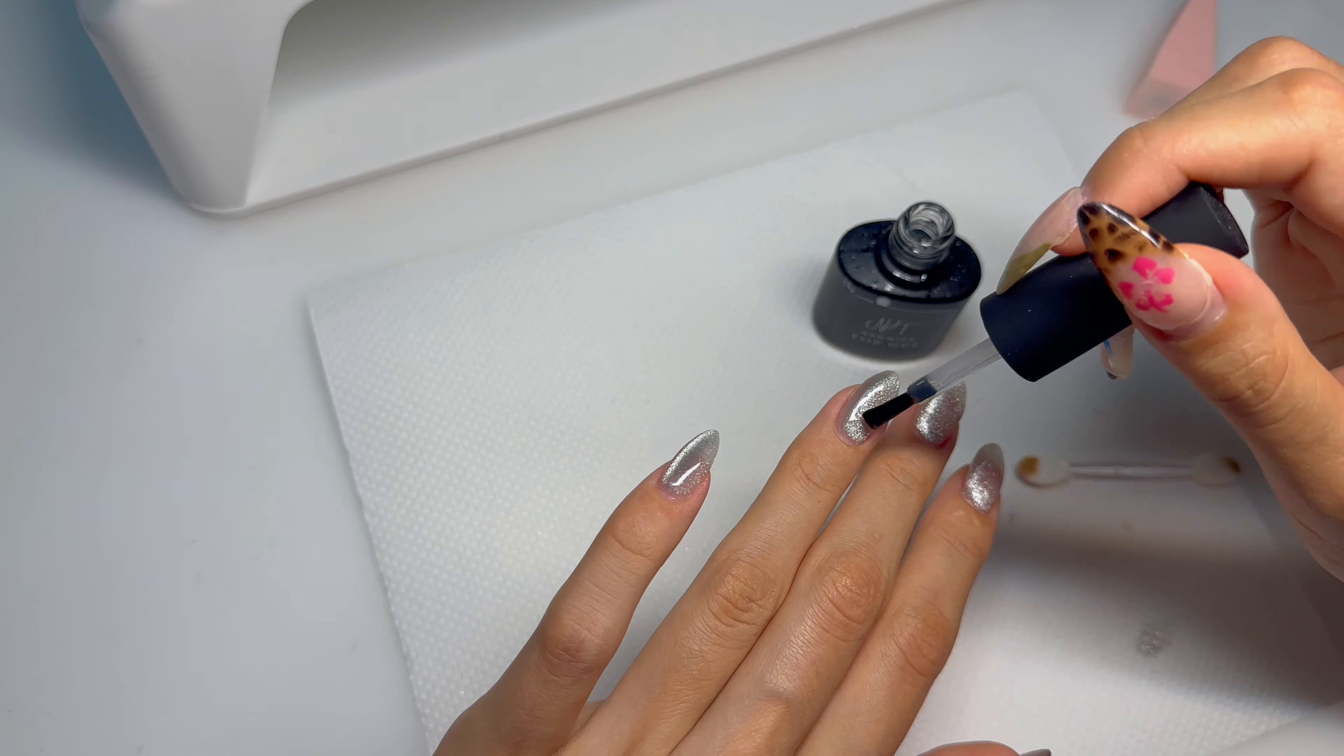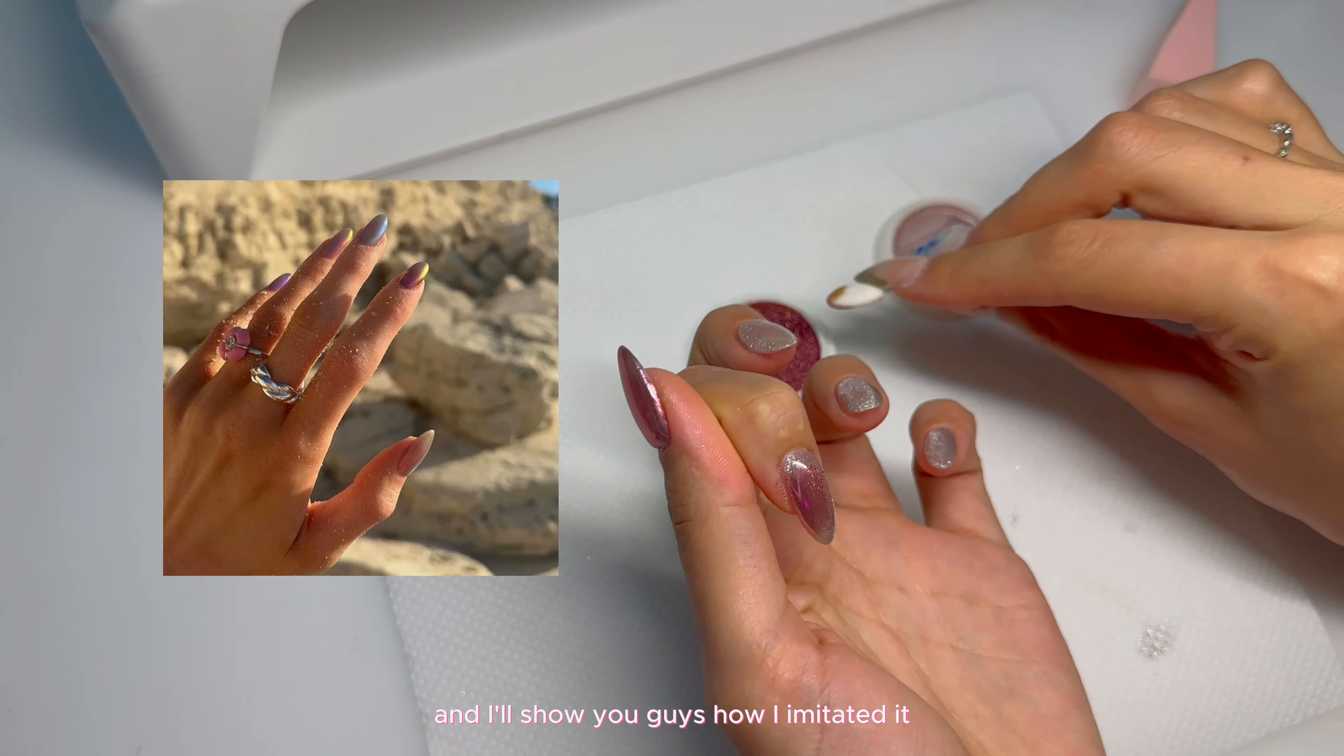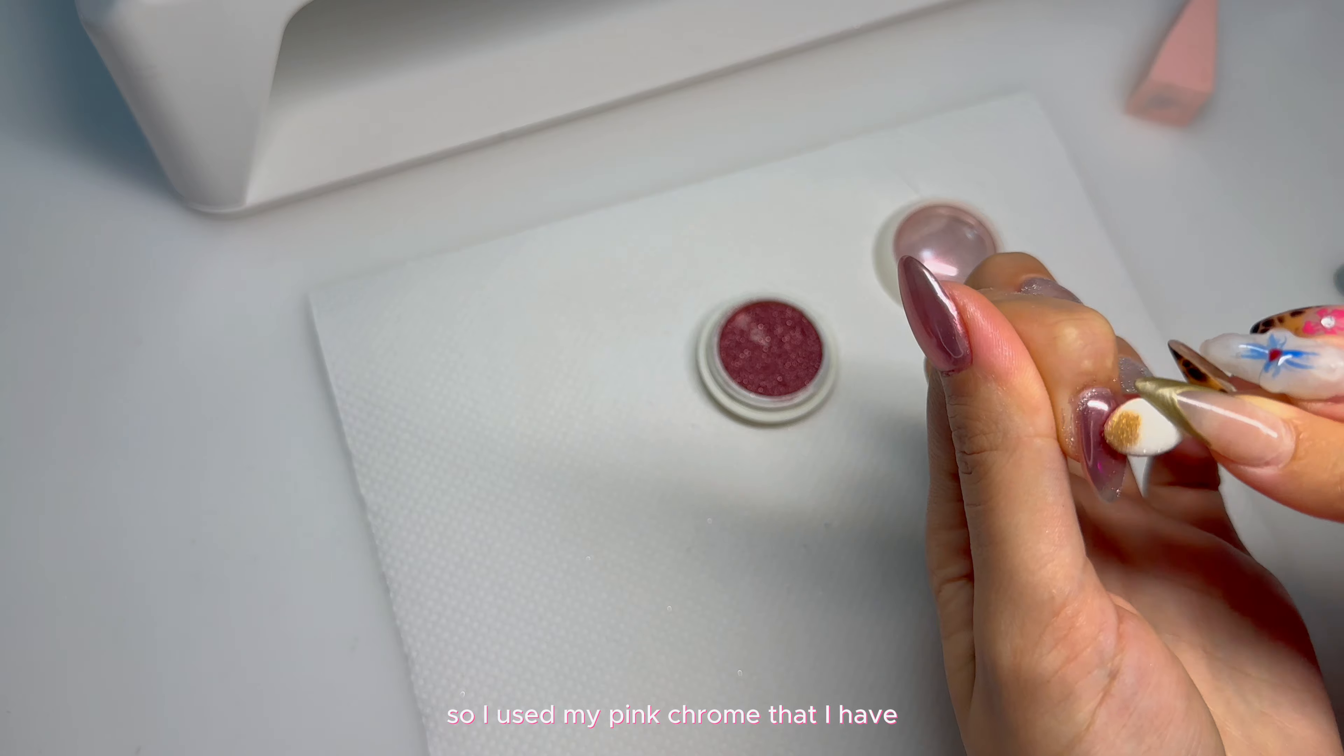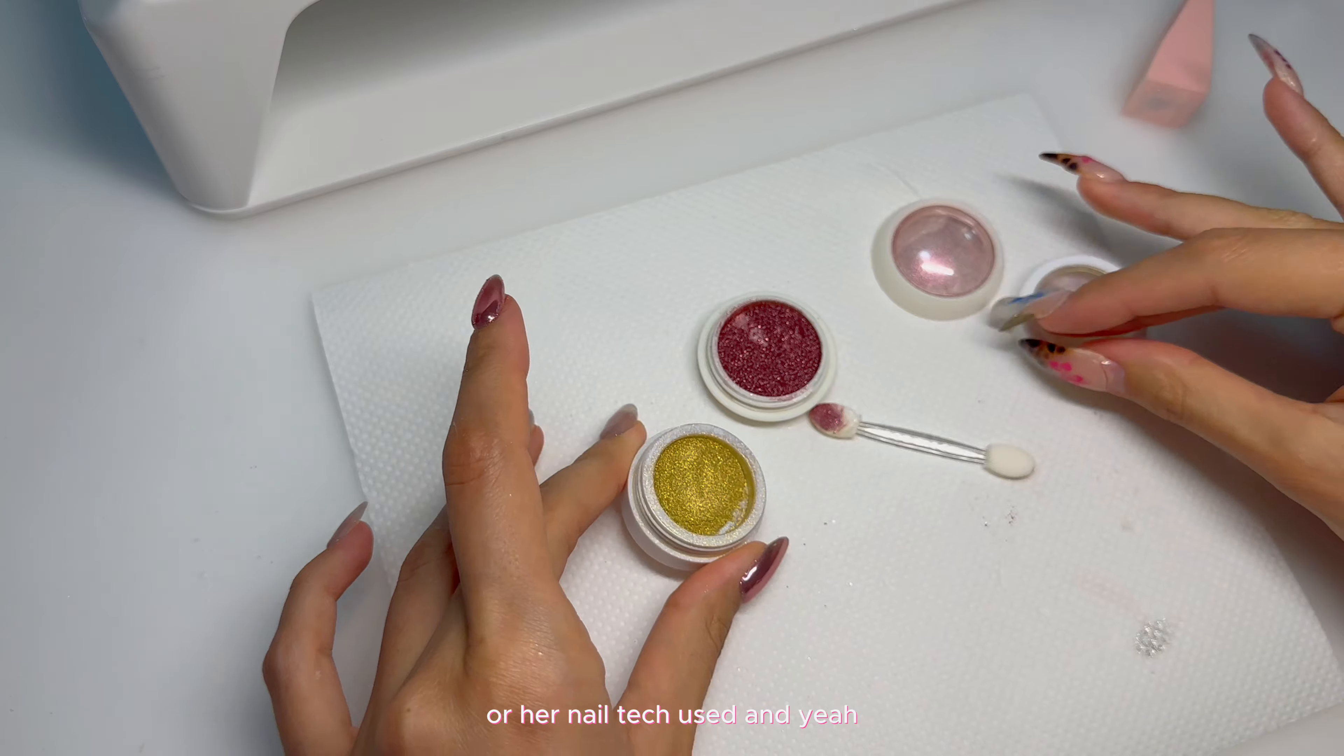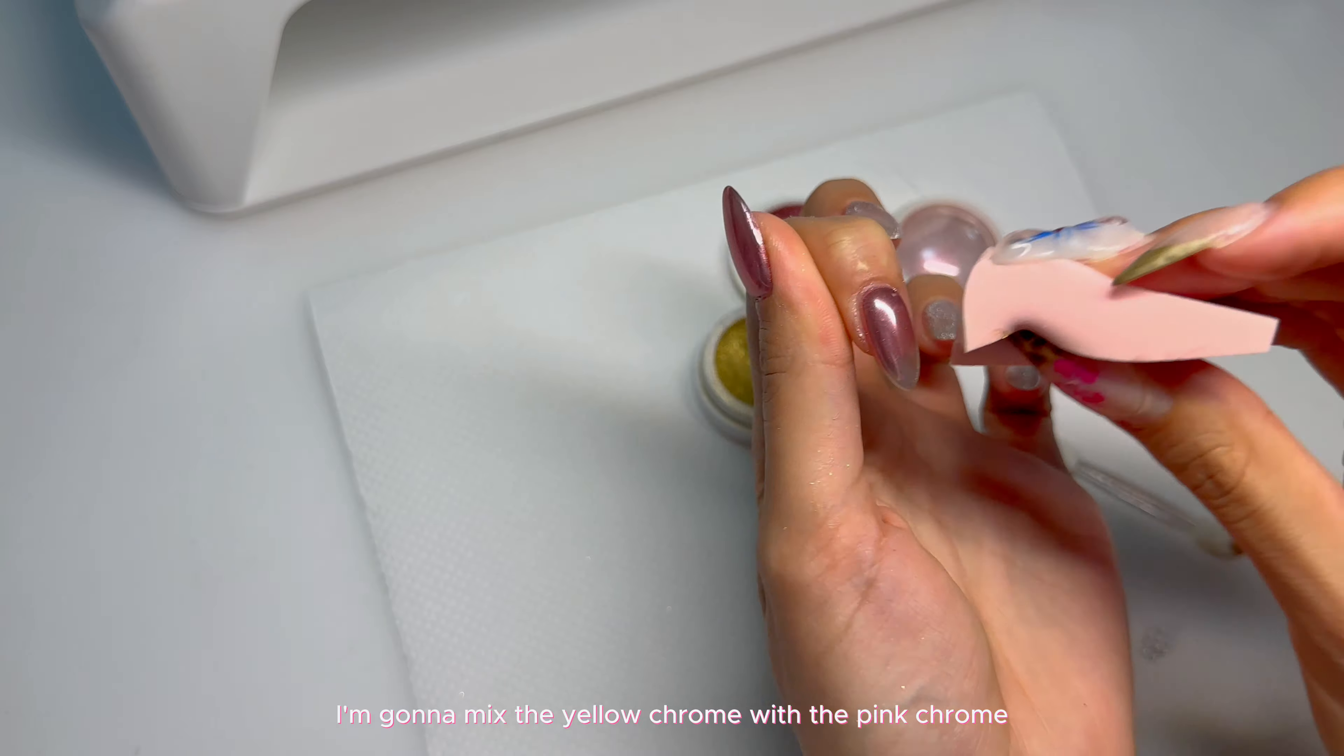I'm going to be using like five different chromes, but I will show you each one. I'll put up a picture of Kylie's nails up here and I'll show you guys how I imitated it. The index finger looked like a pink chrome that she was using, so I used my pink chrome that I have. I think it's the exact same shade as she used or her nail tech used.